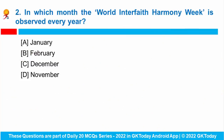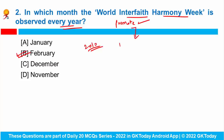Question number two: in which month is the World Interfaith Harmony Week observed every year? The World Interfaith Harmony Week is an annual event observed during the first week of February, after General Assembly designation in the year 2010. The General Assembly established it as a way to promote harmony between all people regardless of their faith. This year the slogan for the observance is 'Interfaith Pandemic Recovery'.